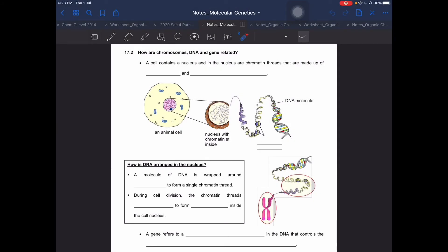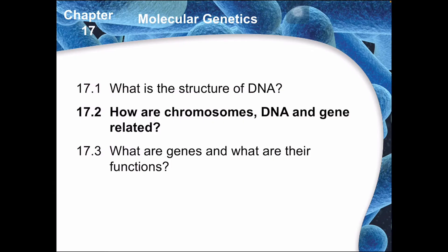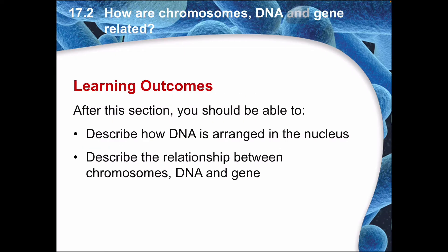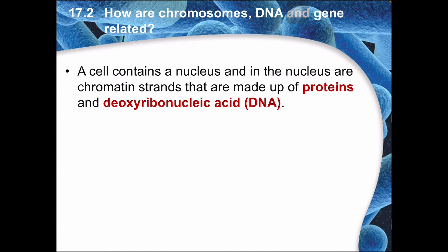Hi everyone, welcome to this second video on chapter 17, molecular genetics. This will be a rather short video where we will explore how exactly chromosomes, DNA, and genes are related. You have now learned about DNA, and you previously learned about genes as well as chromosomes, so sometimes you might be confused about which is which. This will be under 17.2, where we will find out how they are related. You will learn how DNA is arranged in the nucleus, and how to describe the relationship between chromosomes, DNA, and genes — basically, what each term means.